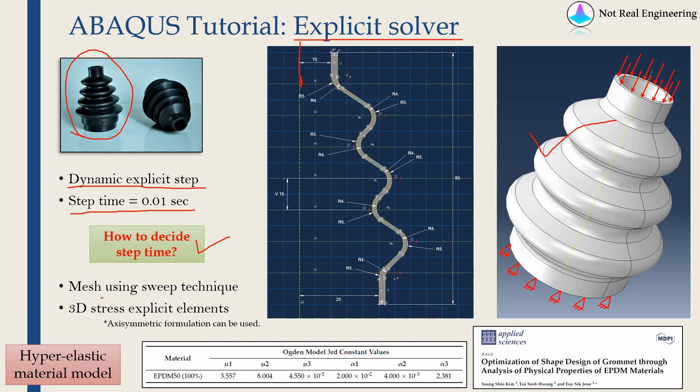Then we will mesh part using sweep technique and we will use 3D stress explicit elements. Now I know this problem can be done using axisymmetric formulation. We don't have to model it into 3D. If we do it axisymmetric, we will save a lot of computational time. But I already have many videos in this channel where we use axisymmetric formulation.